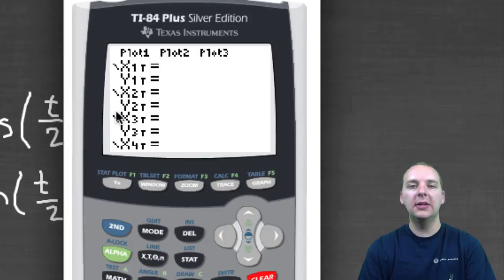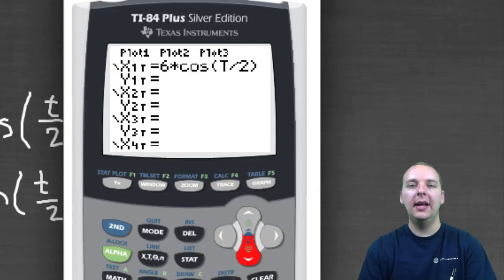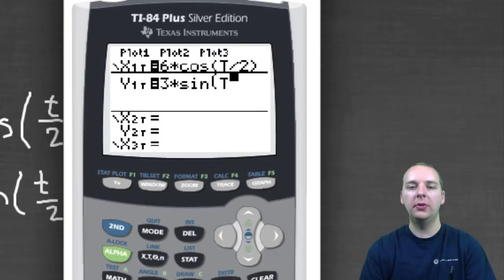Okay, so let's enter in this example we wanted to do. On my previous screen, I had that I wanted to graph 6 cosine T over 2, so I'll have 6 times cosine of T over 2 for the X, and then 3 sine T over 2 for the Y, so 3 times sine T over 2.